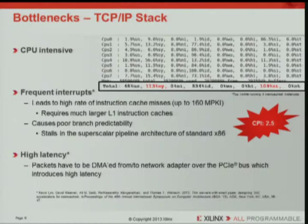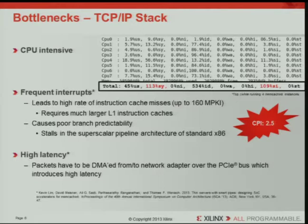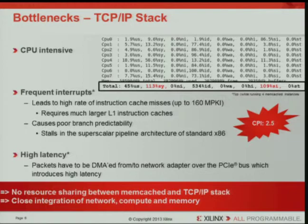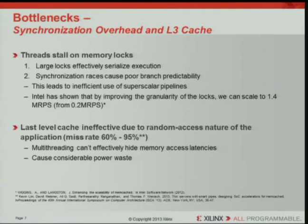On top of that, the TCP/IP stack creates really high latency. The lessons we took away were: first, minimize any resource sharing between the TCP/IP stack and the application because the TCP/IP stack can be really disruptive; and second, we want a really close integration of network, compute, and memory to minimize latency. The second problem with x86 implementations is that threads stall on memory locks, giving synchronization overhead. Large locks effectively serialize execution, eliminating the benefits of data parallelism, and synchronization races cause poor branch predictability and inefficient use of the superscalar pipelines.